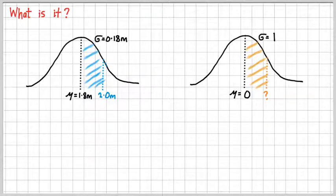So as you can see, it's the probability between 1.8 metres and 2 metres. Equivalently, on the right-hand side of the screen there, we could draw a standard normal distribution with a mean of 0 and a standard deviation of 1.